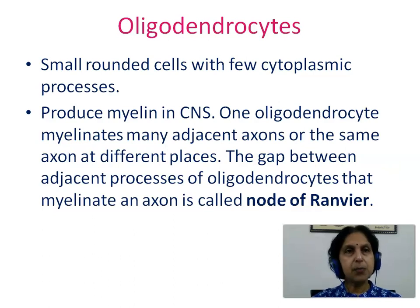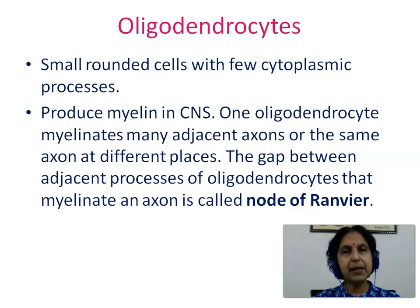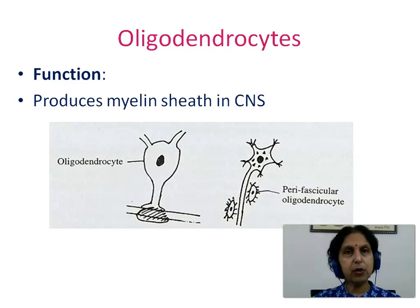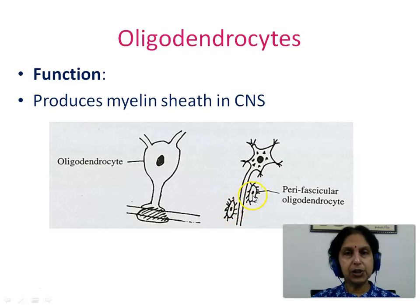Oligodendrocytes are small rounded cells with few cytoplasmic processes. They produce the myelin sheath in the central nervous system. One oligodendrocyte myelinates many adjacent axons or the same axon at different places. The gap between adjacent processes of oligodendrocytes that myelinate an axon is called the node of Ranvier. This picture shows the oligodendrocyte with its cell processes forming the myelin sheath around the axon.